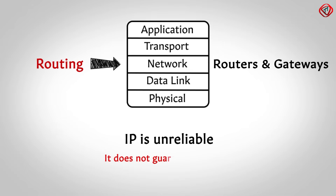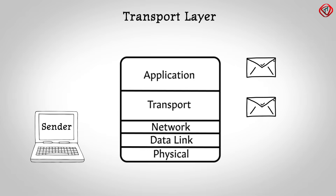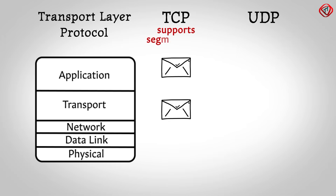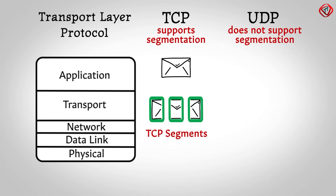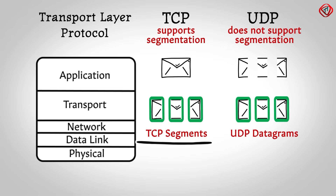IP is unreliable — it does not guarantee delivery nor check for errors. These tasks are the responsibility of the transport layer. At the sending node, the transport layer receives messages from the application layer. When the message reaches the transport layer, one of the transport layer protocols — TCP or UDP — is selected. TCP supports segmentation, so if the message is large, TCP divides it into smaller pieces and adds a header to form a TCP segment. UDP does not support segmentation, so applications using UDP should send messages short enough to fit into one UDP datagram. The data unit in TCP is called a TCP segment and the data unit in UDP is called a UDP datagram.